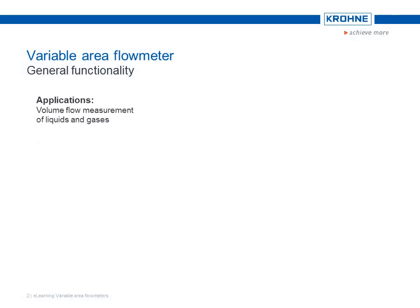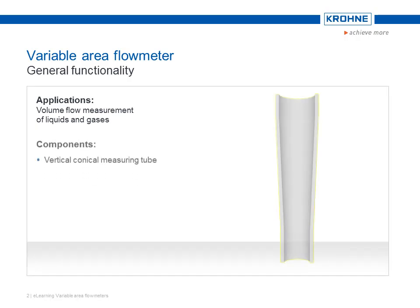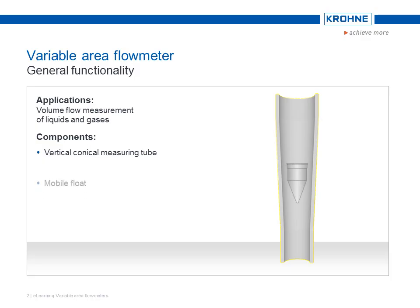Variable area flow meters are used to measure the volume flows of liquids and gases. They consist of a vertical conical measuring tube which widens upwards and a specially formed float which can move up and down freely in the measuring tube. Together, the reference position of the float and the measuring tube create a variable ring orifice.